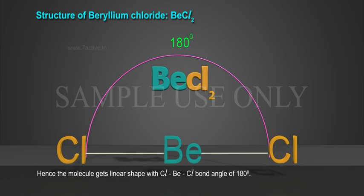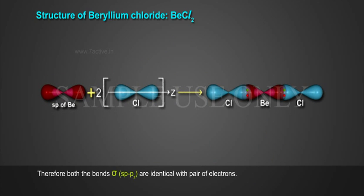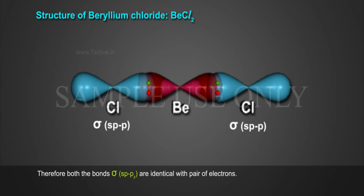Hence, the molecule gets linear shape Cl-Be-Cl bond angle of 180 degrees. Therefore, both the bonds sigma sp-z are identical with pair of electrons.